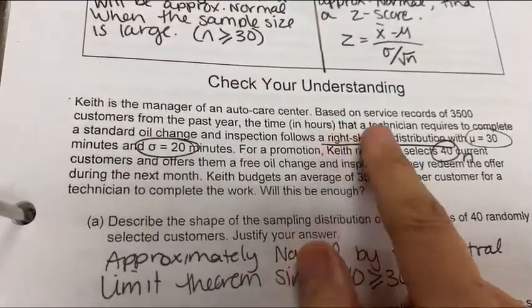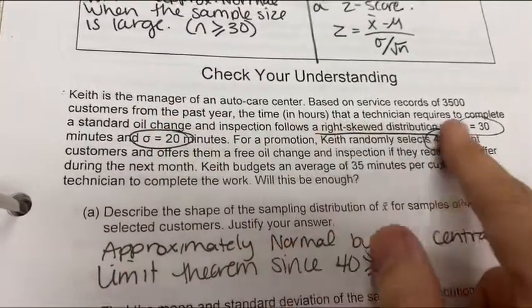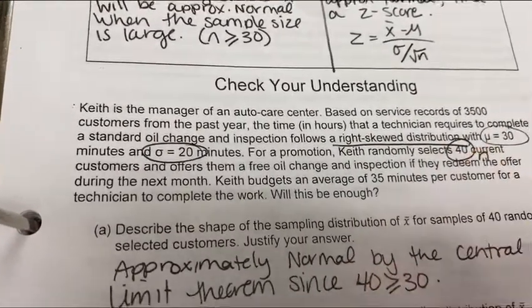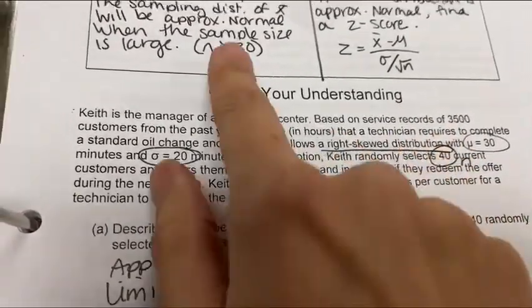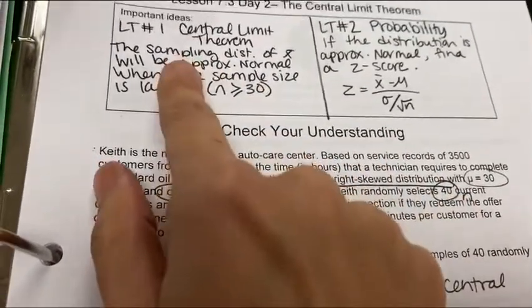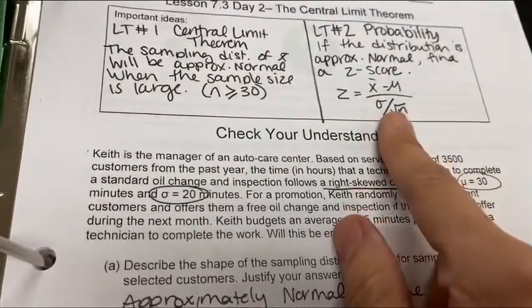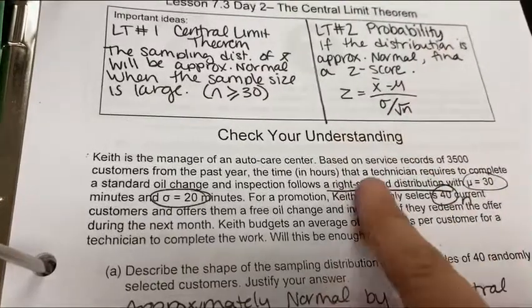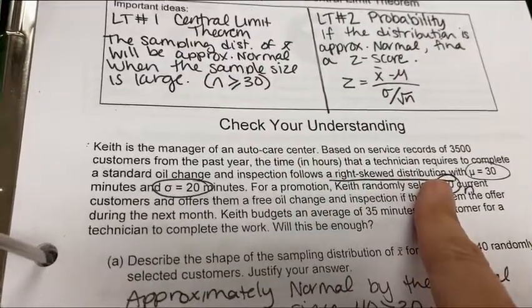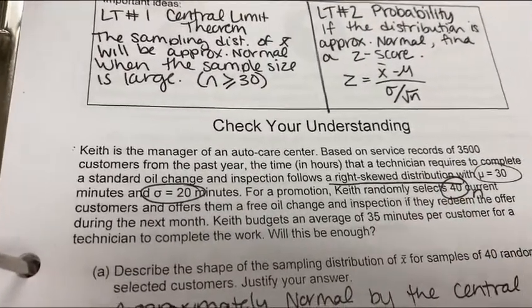So let's take a look at our question. It says Keith is a manager of an auto center based on his service records of 3,500 customers. So that's his population. And this data is right skewed. So that's normally a problem unless n is 30 or greater. And what do you know? It's 40. So we can apply the central limit theorem and use our fancy calculator to get an answer of probability. Even though the population data is not normal, because n is large enough, the sampling data will be normal.